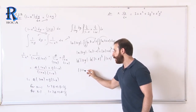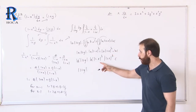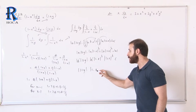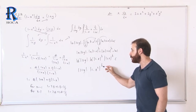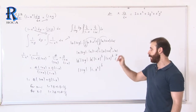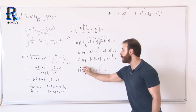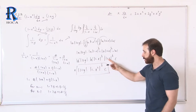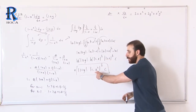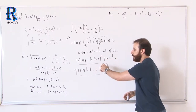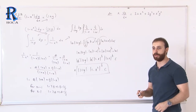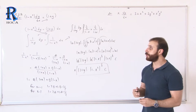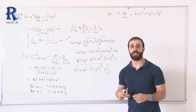Removing the logarithms from both sides gives 1 plus y equals c times (1 minus x)^(1/2) times (1 plus x)^(1/2), which we can also write as c times the square root of (1 minus x)(1 plus x). This is our result. This was a good question for practicing partial fractions.